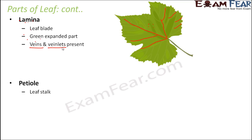Let us talk about the next part of the leaf, that is petiole. Petiole is nothing but the leaf stalk. Its function is obviously to hold the leaf in place. Now if you talk about the appearance of petioles in different plants, there are plants where petioles are quite long, some where they are quite short, and in fact there are also plants where petioles are not present at all. So it is not a mandatory part of a leaf — even if a petiole doesn't exist, the leaf can very well do its designated function.